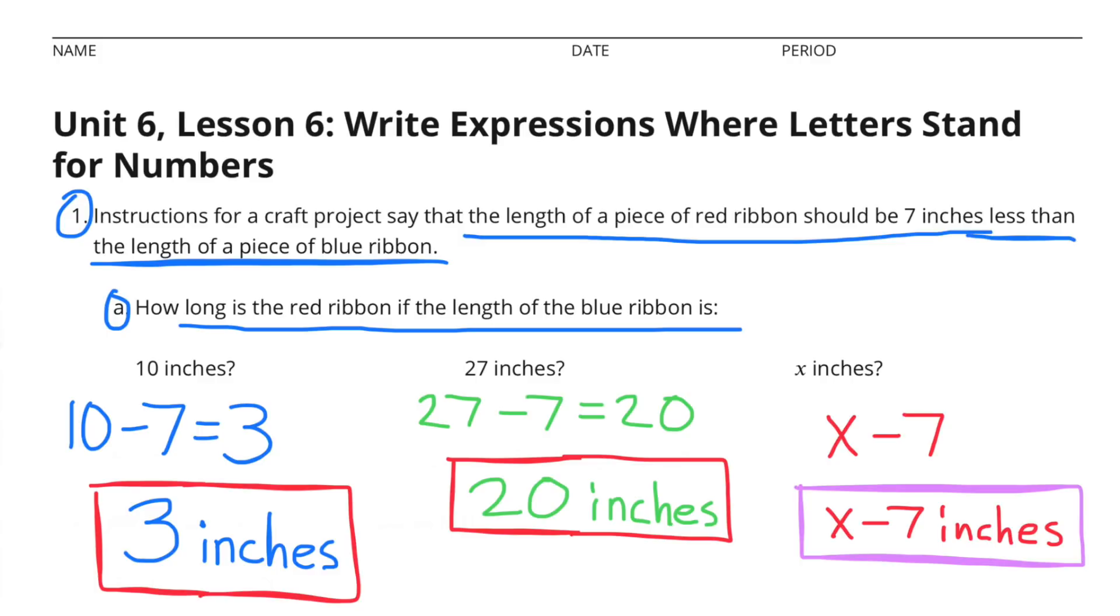How long is the red ribbon if the length of the blue ribbon is X inches? X minus 7 is X minus 7 inches.